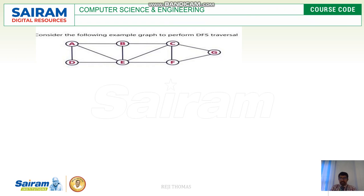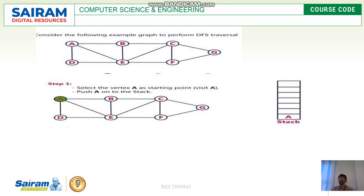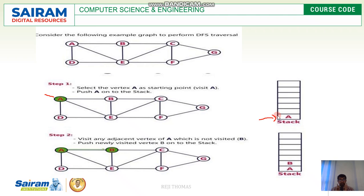Consider a graph with seven nodes, as you can see on the screen, with vertices labeled A to G. We have selected A as the starting vertex — you can see the change in color. Push A onto the stack; you can see the stack now has a single element. Now visit any adjacent vertex of A. We take B as A's adjacent vertex — going in alphabetical order — and push B onto the stack. The stack now has two elements.